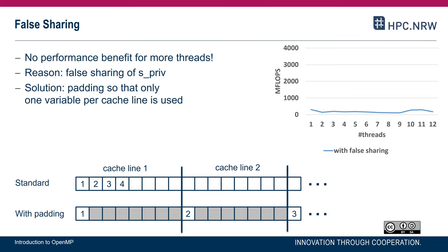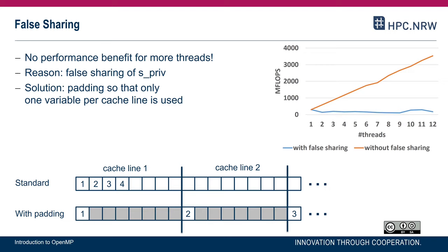A solution is to avoid having these variables reside on the same cache line. The real solution is to use the reduction clause, as discussed at the end of the previous video. But if we introduce padding - meaning only one variable per cache line - then we get actual performance improvement and can see good scalability, just by avoiding false sharing.